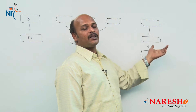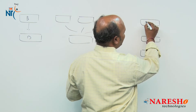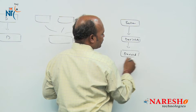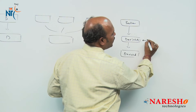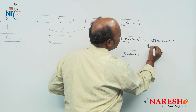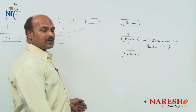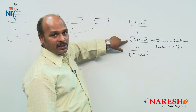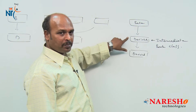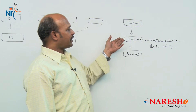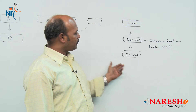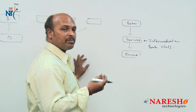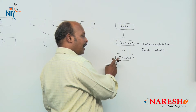In multi-level inheritance, the first class is the base, the next is derived, and the third is also derived. But for the third class, the middle class acts as a base — that is why it is called an intermediate base class. We need to use protected members here because when data members are private they are not accessible outside, so we declare derived class members using protected so they are available in the next derived class.